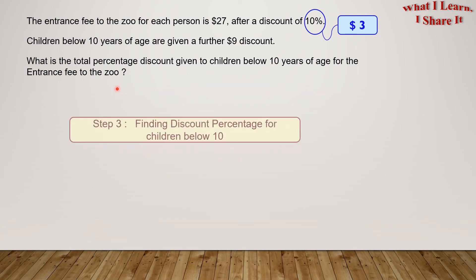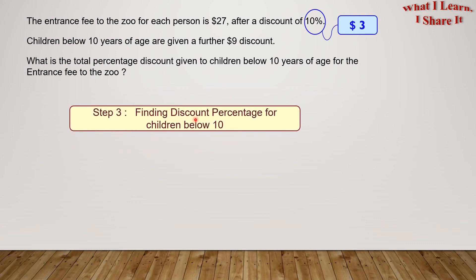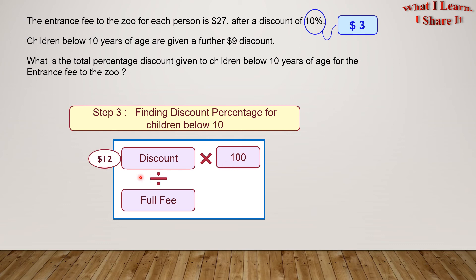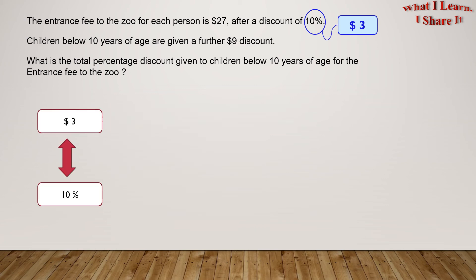Our third step would be to find the discount percentage for children below 10. The formula for the discount percentage is: discount divided by the full fee, times 100. We know that the discount is $12, but we don't know what the full fee is. So let's find it. From step 1, we know that $3 makes up 10% of the fee.